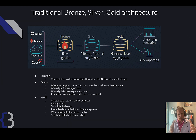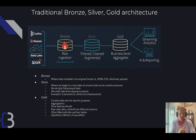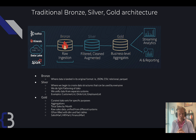There's a traditional bronze, silver, and gold architecture. Bronze is when we land data — we get data from Kinesis, another data lake, Spark, Kafka, Fivetran, Cdata, MuleSoft, or whatever. The data lands in some type of raw format, and that's our bronze layer. It's dirty, you wouldn't really want to do analytics directly off of it, it's difficult to join data, and it's not all consistent.